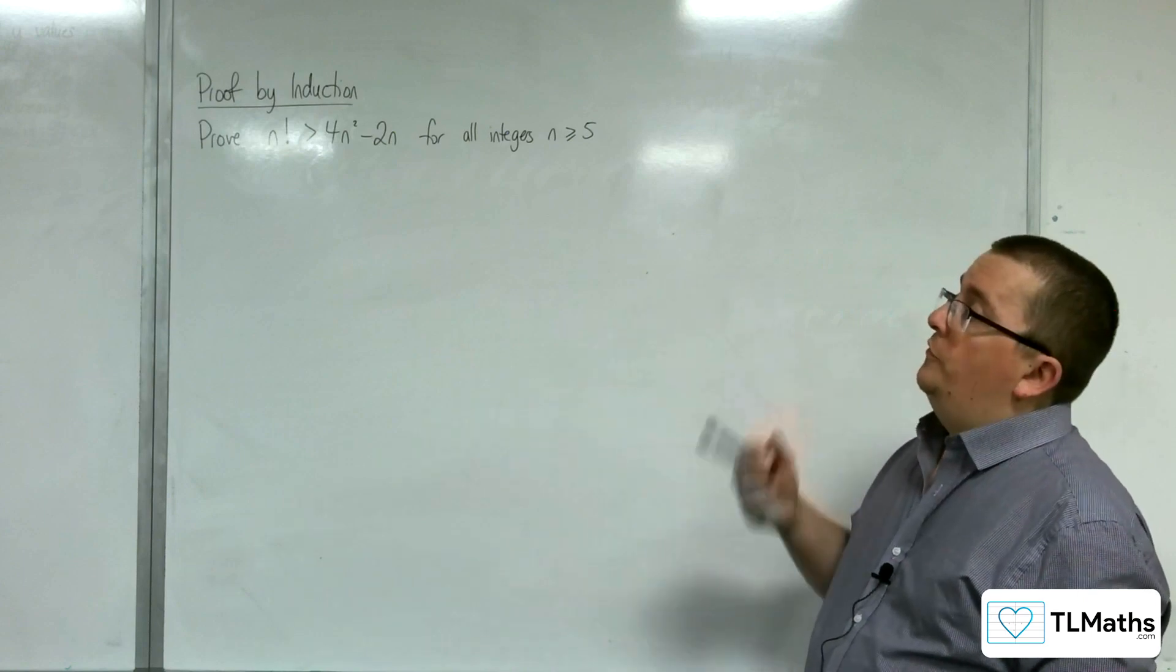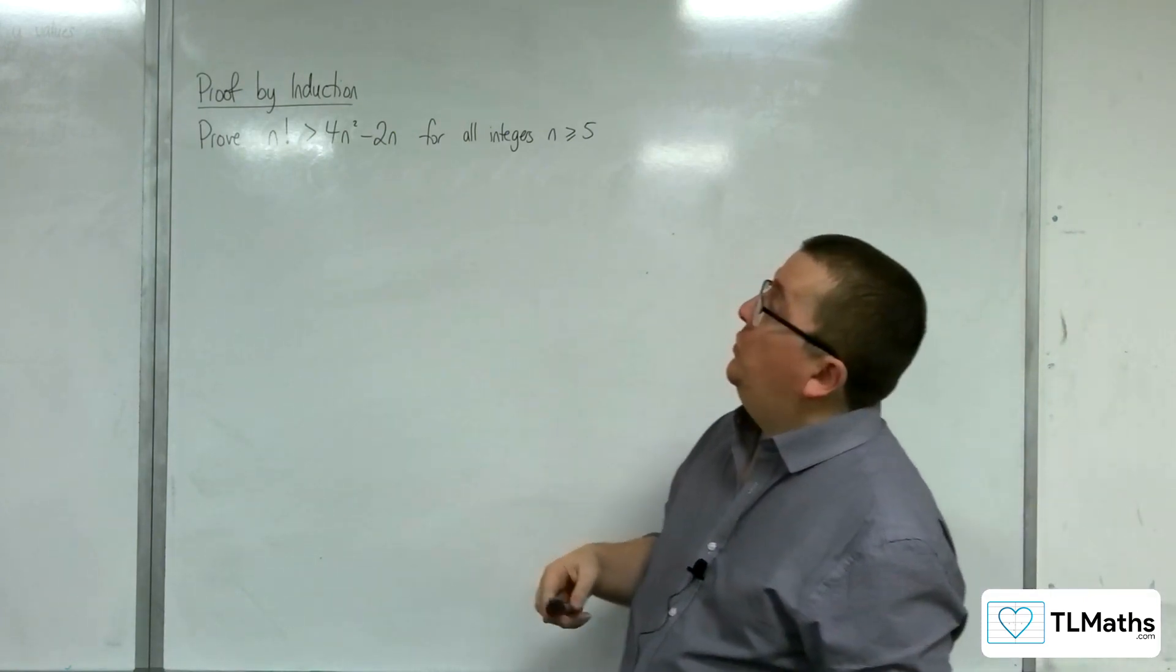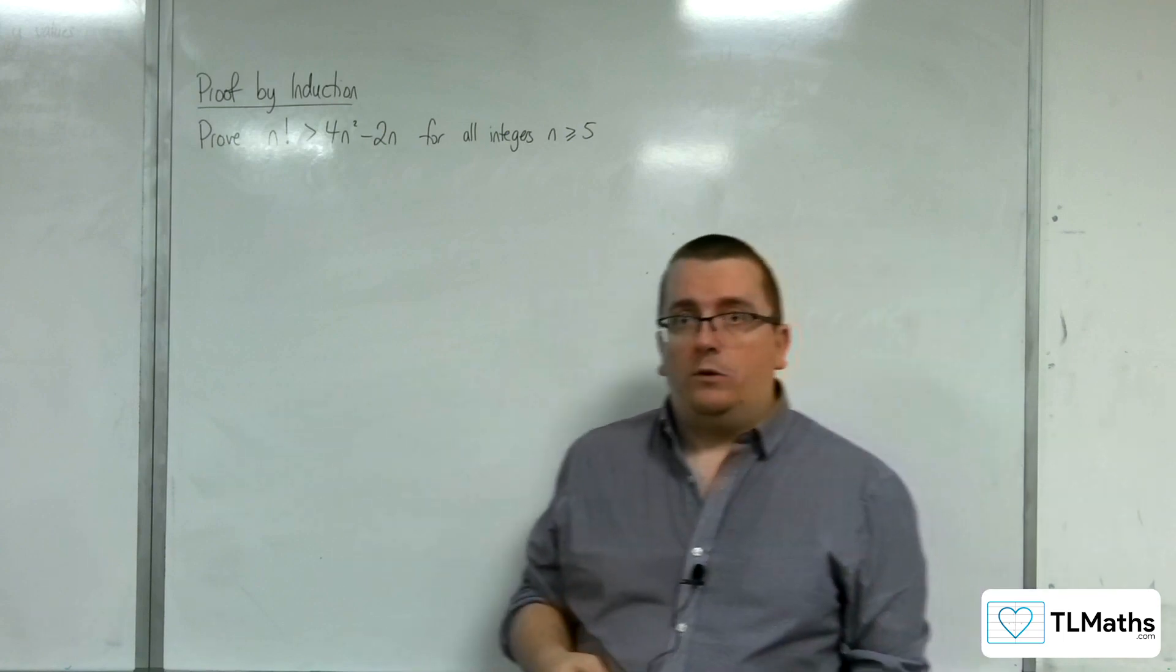So in this video we are going to prove by induction that n factorial is greater than 4n squared take away 2n for all integers n greater than or equal to 5.